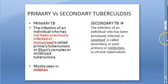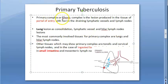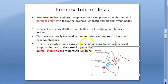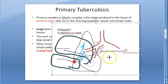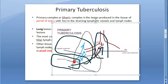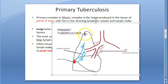Primary tuberculosis has this Ghon's complex. How do you define Ghon's complex? It is a lesion produced in the tissue at the portal of entry — wherever the bacilli has entered, at that place in that tissue there will be three things: a focus, a draining lymphatic vessel, and a lymph node. These three things are affected. For example, if that person inhaled the tuberculosis bacteria, there is a focus, the draining lymphatics, and here is the lymph node to which it is reaching. These three components together form the Ghon's complex, or the primary complex.